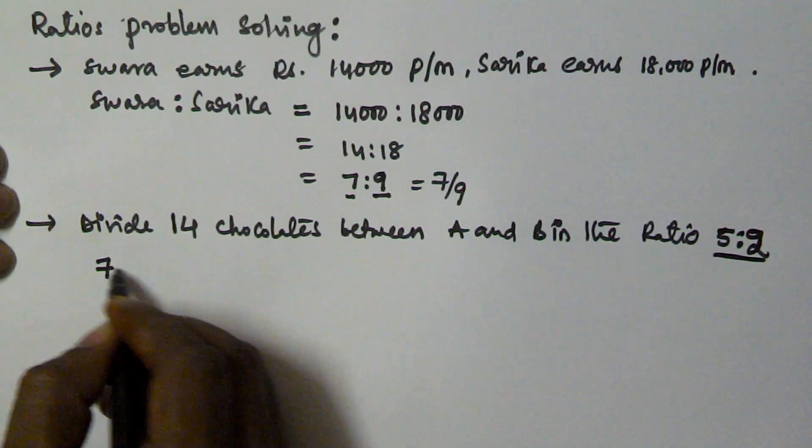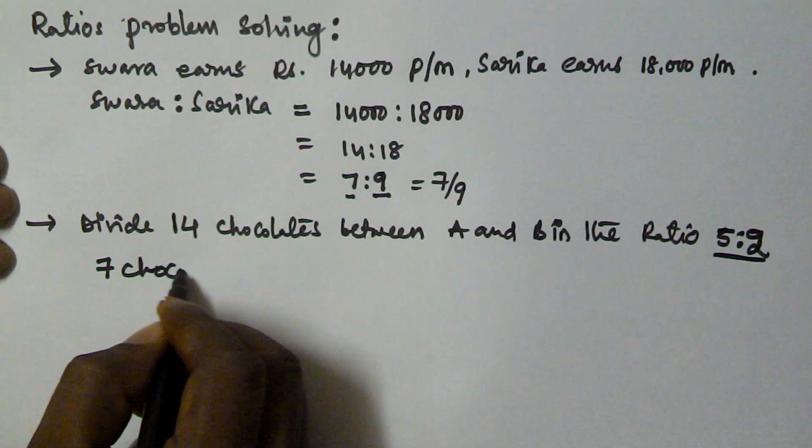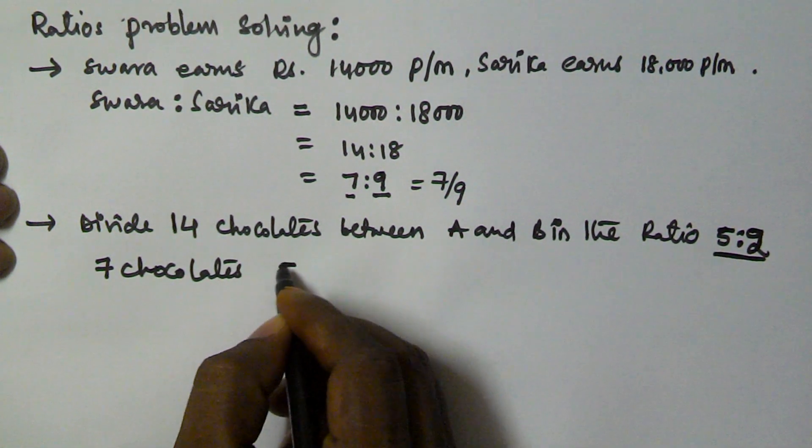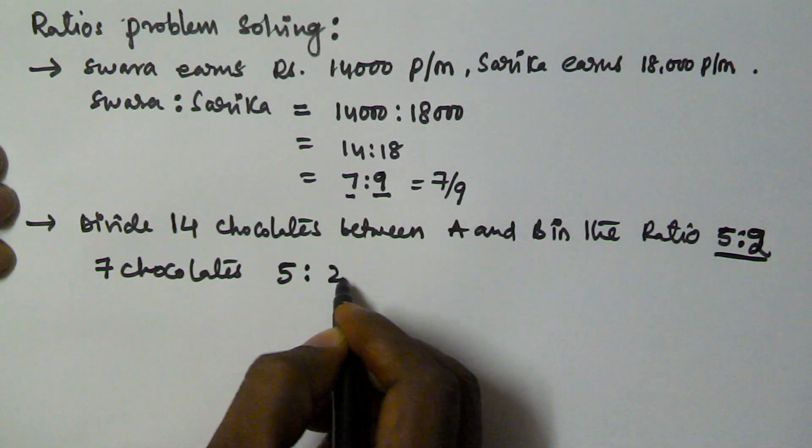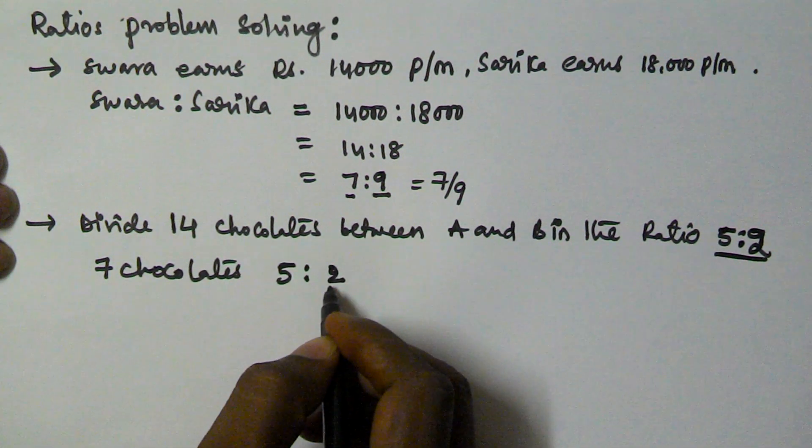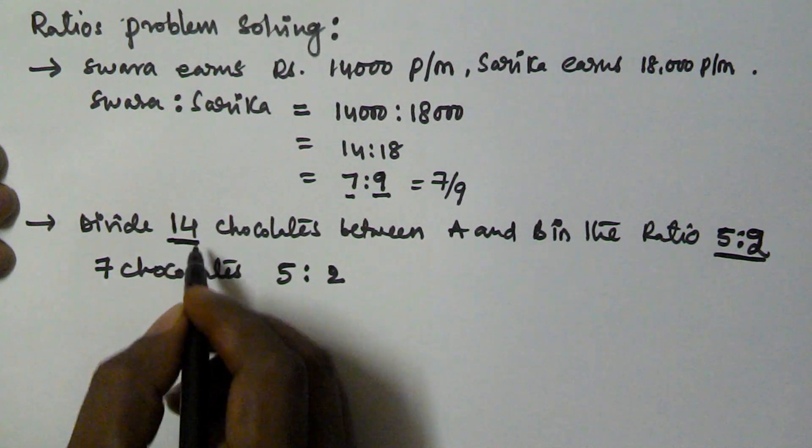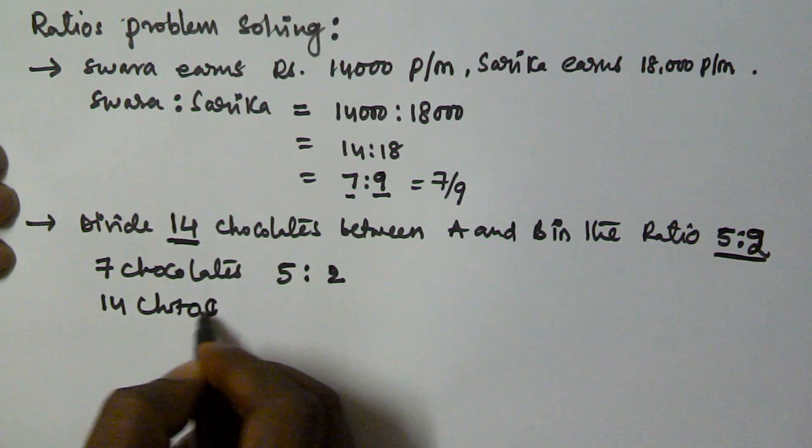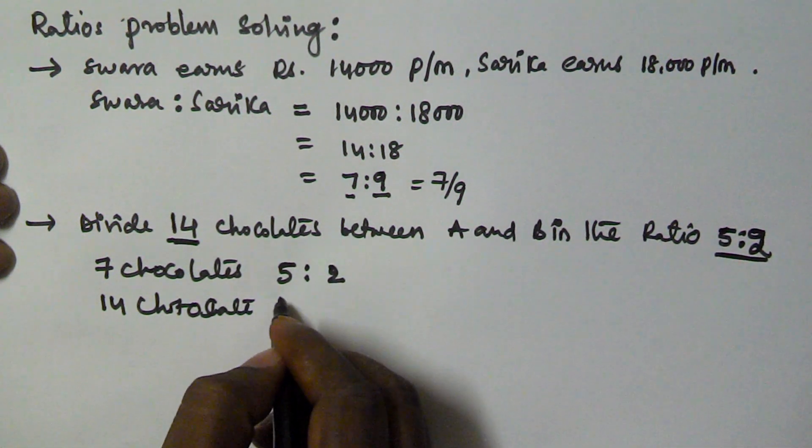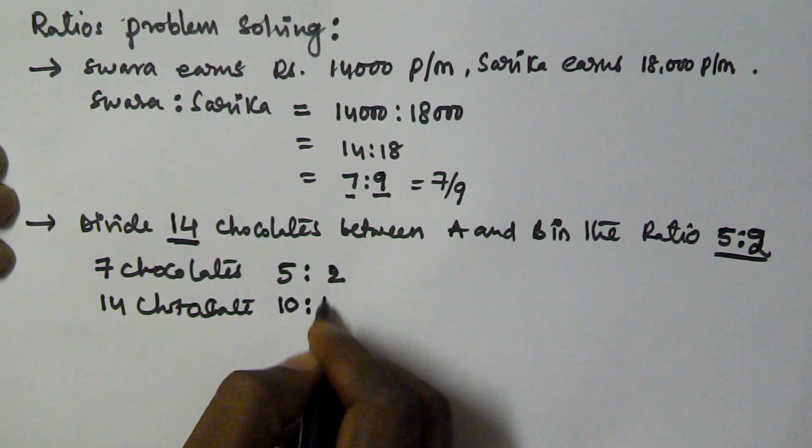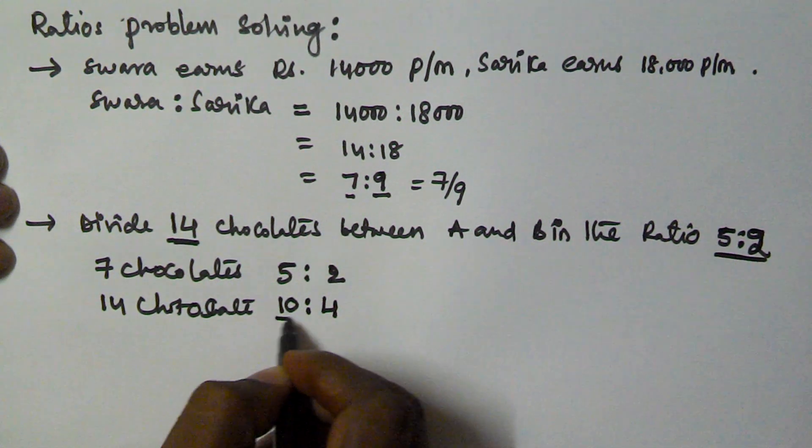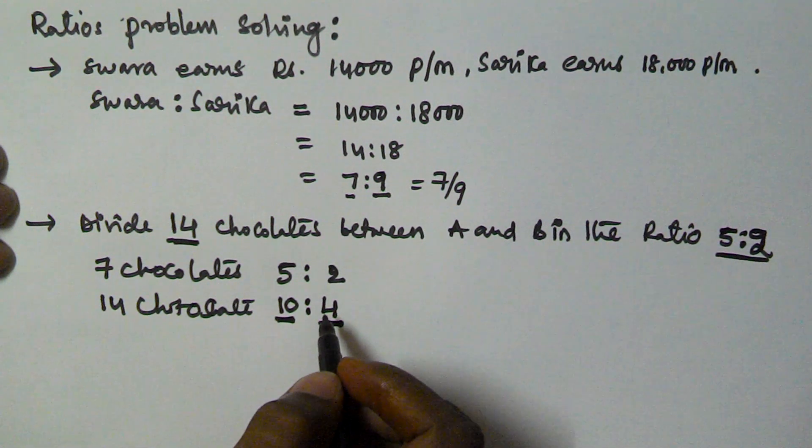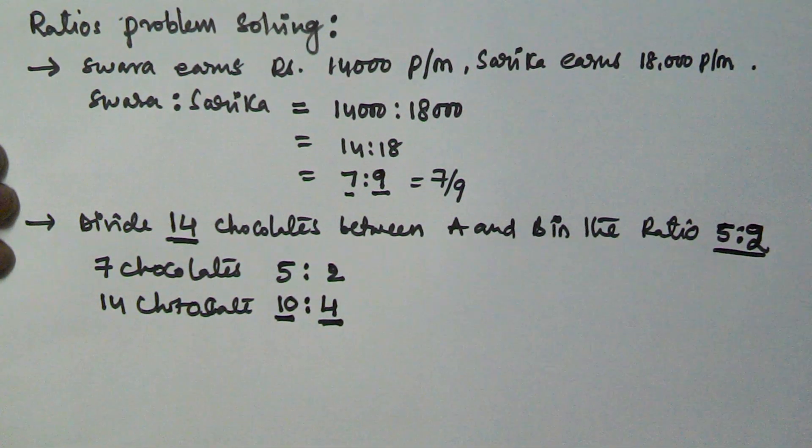So in the ratio 5 is to 2 means, if there are 7 chocolates, A will get 5 and B will get 2. But actually there are 14 chocolates. So this number will become double. That is 10 is to 4. That means A will get 10 chocolates and B will get 4 chocolates. I hope you got this one.